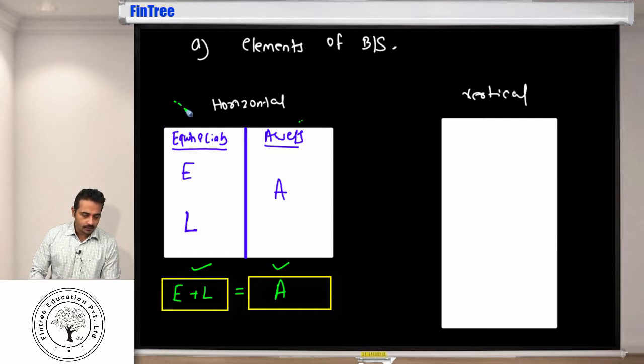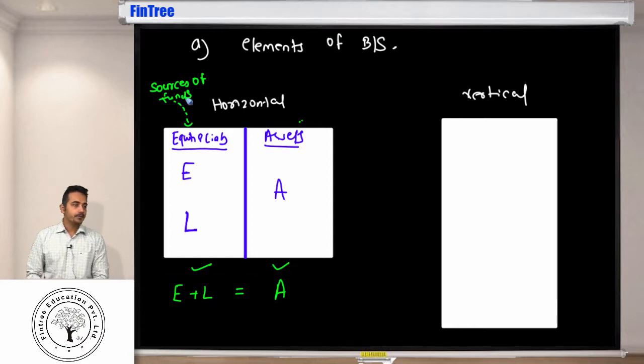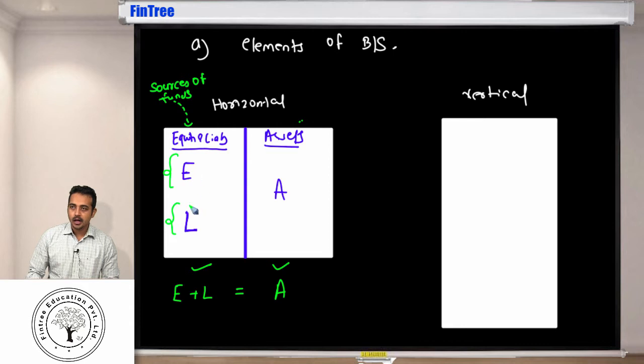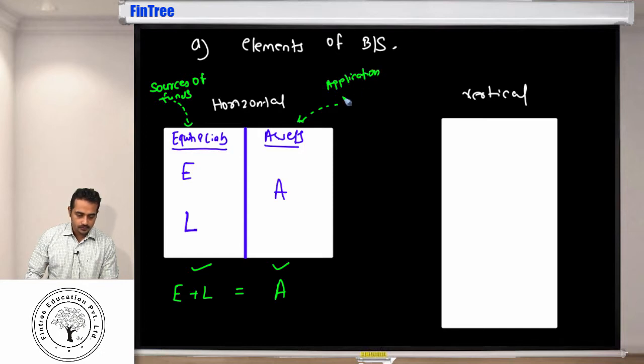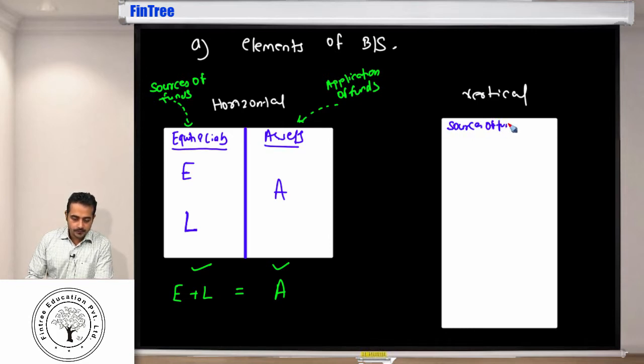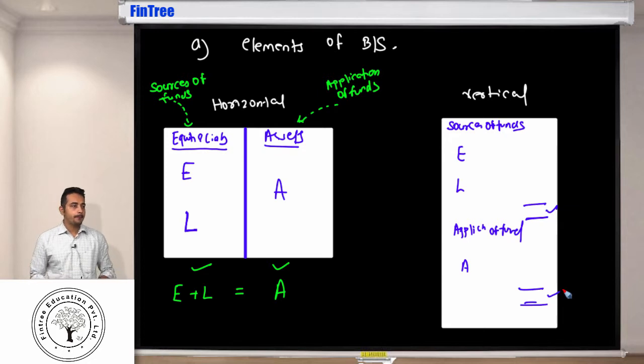Typically this side of the balance sheet, think of this as what are the sources through which an organization has been able to generate funds. An organization will generate fund either by investing, the promoters will invest their own money, or they will take money from outsiders in the form of debt. And this portion think of this as how that money is being put to use. So this is your application of funds. And of course whatever sources you have should always match with the application. When you prepare balance sheet in a vertical fashion, you start with the sources of funds, list down equity and liabilities, take a total, then you start with application of funds which is all your assets, then you take a total and this total should match with this total.